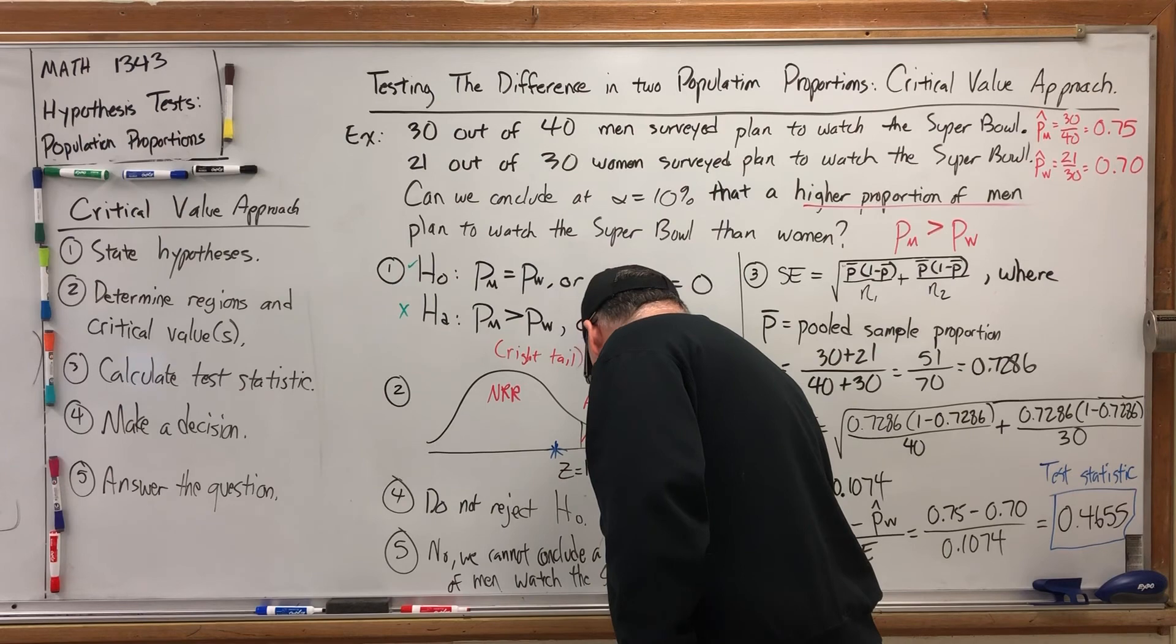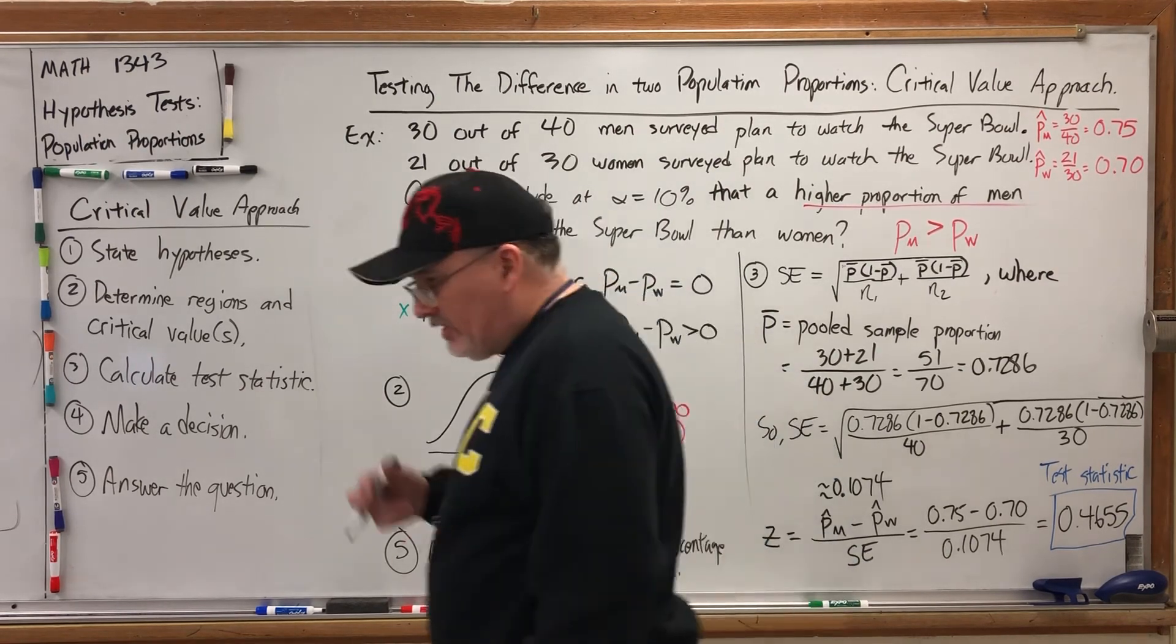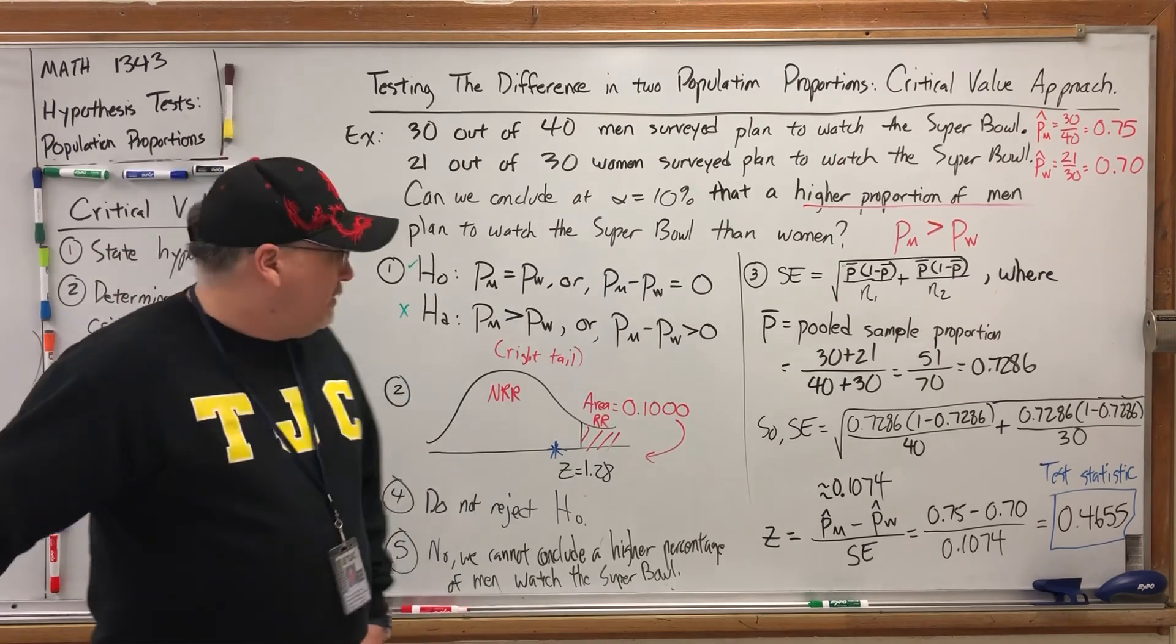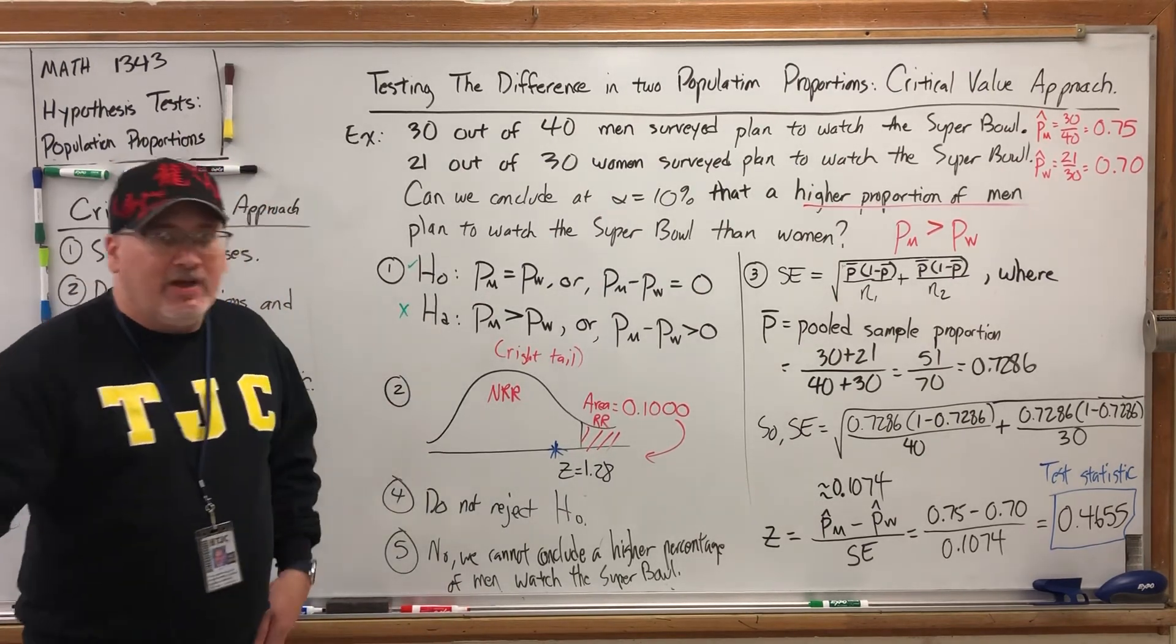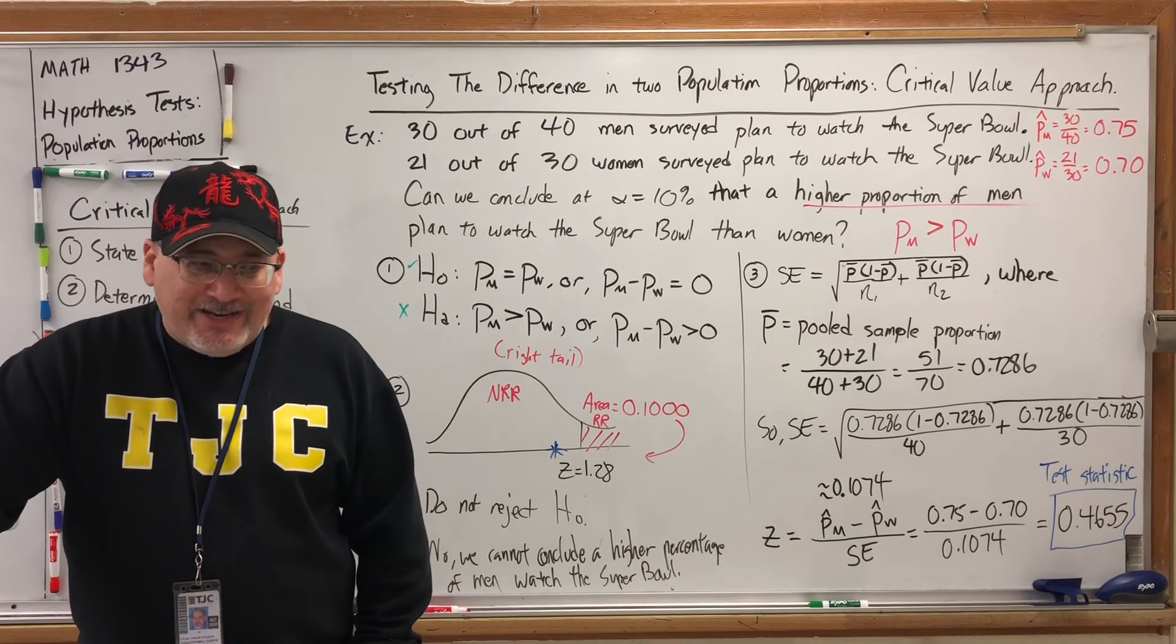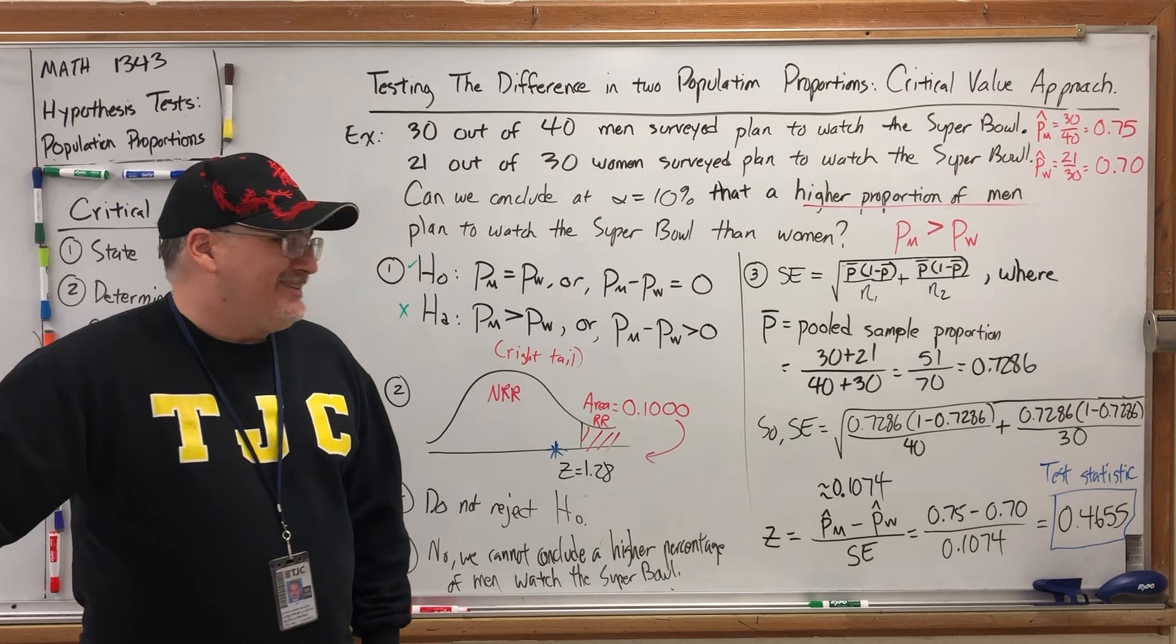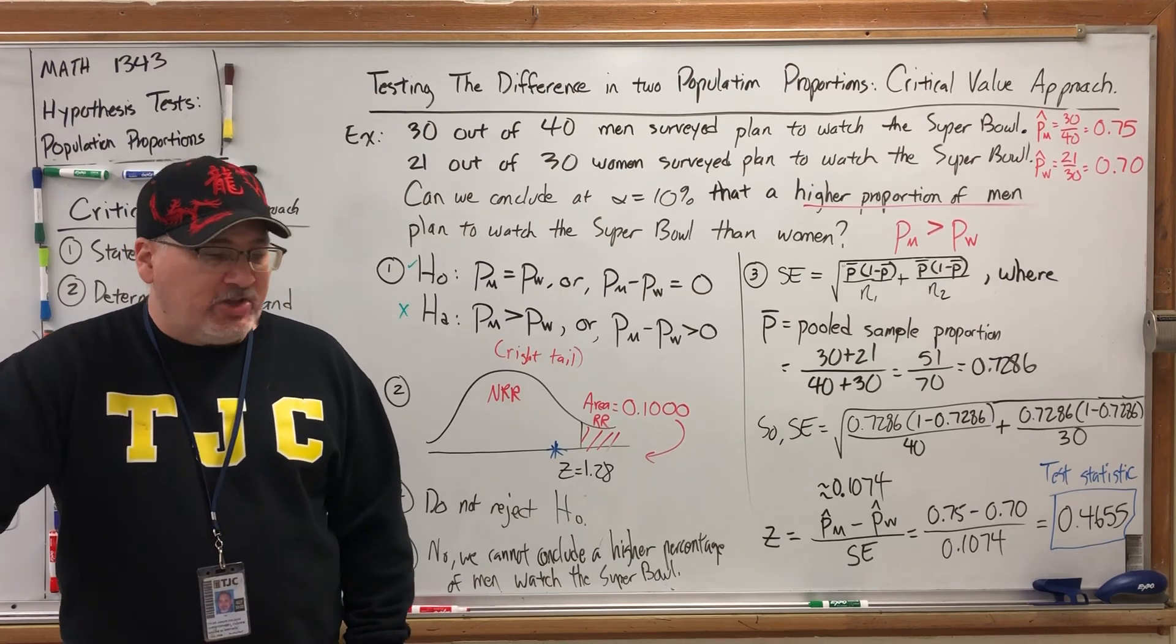It does however point out that just because your sample disagrees with your claim about the population, just because your sample disagrees with your null hypothesis doesn't mean we can reject the null hypothesis. It's an issue of how much does it disagree with it. In this case it didn't disagree with it enough for us to reject the null hypothesis.